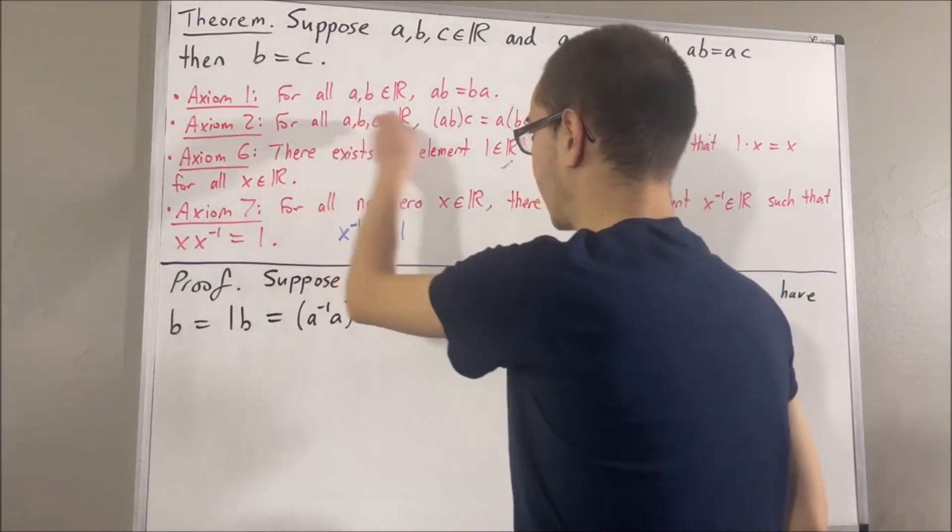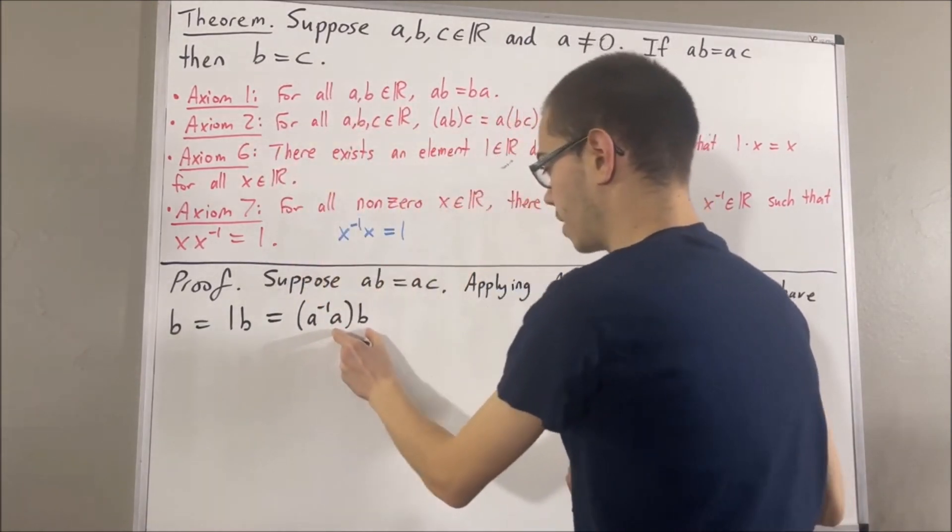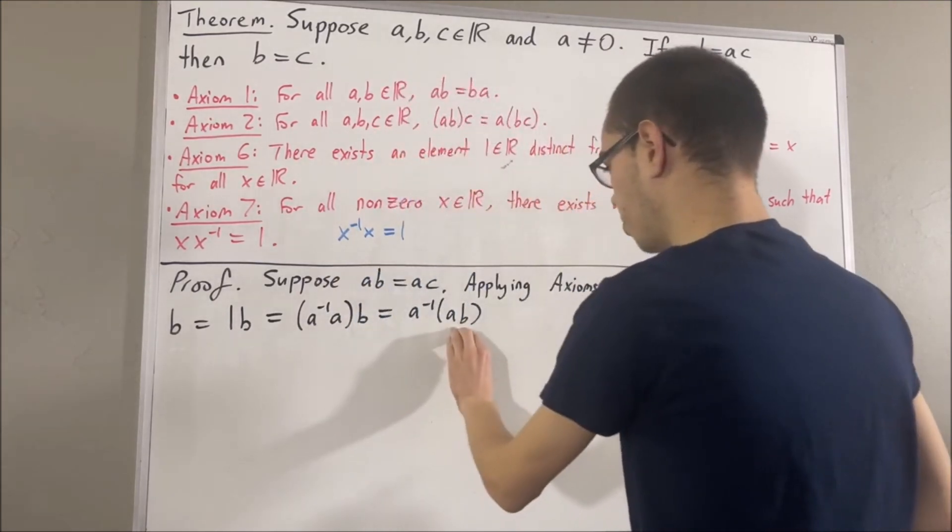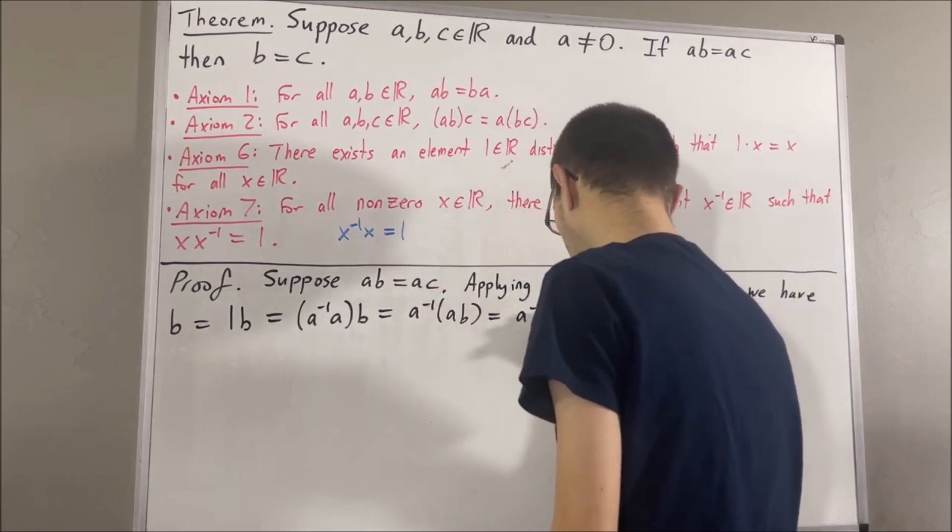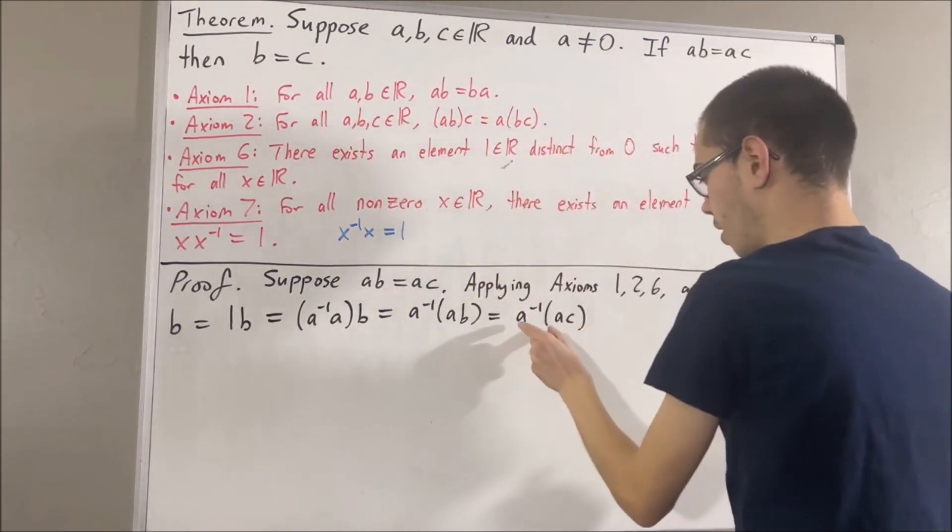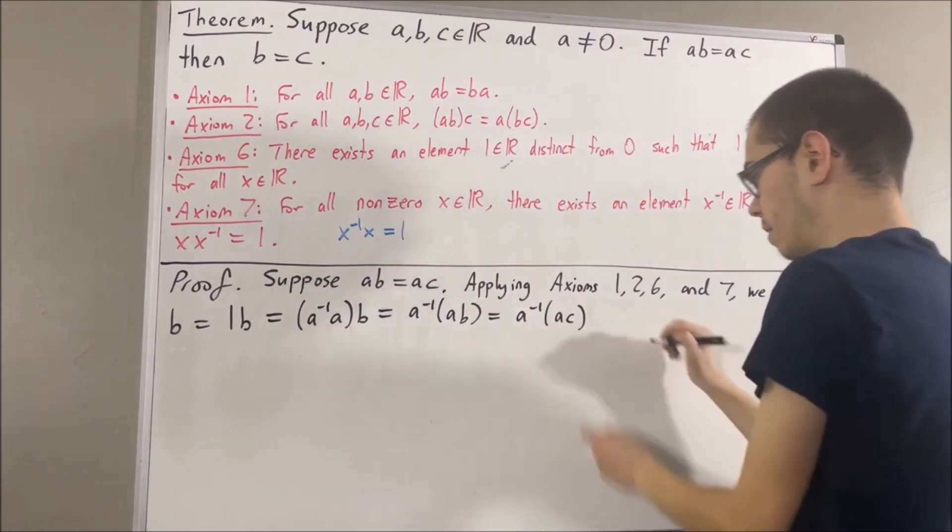And then, we apply axiom 2 and move the parentheses around A times B. And by assumption, A times B is equal to A times C. But then, we apply axiom 2 again. We move the parentheses around the reciprocal of A times A.